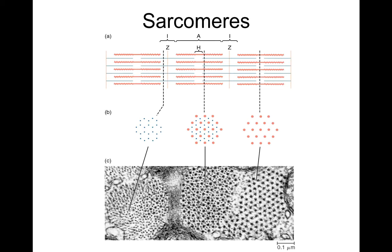If you take cross sections through muscle fibers, depending on where you cut through the sarcomeres, you get different patterns. If you cut through the Z band area, you get small dots because you're only cutting through the actin. If you cut through the A band but not the H region, you get both large and small dots — cross-sectioning through both actin and myosin. If you cut through the H region, you only get large dots because that's where the myosin is.